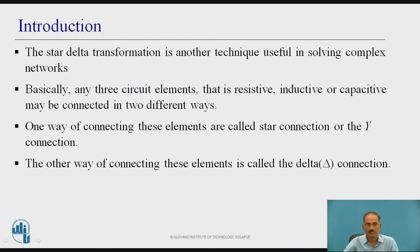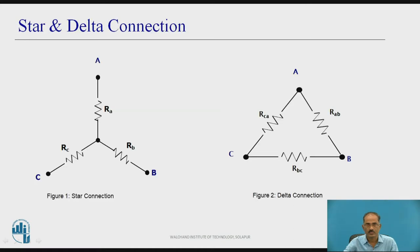Introduction. The star delta transformation is another technique useful in solving complex networks. Basically, any three circuit elements — resistive, inductive, or capacitive — may be connected in two different ways. One way is called star connection or Y connection, and the other way is called delta connection.